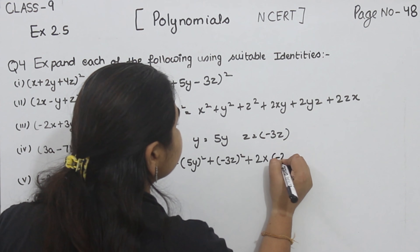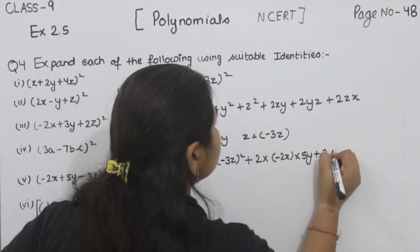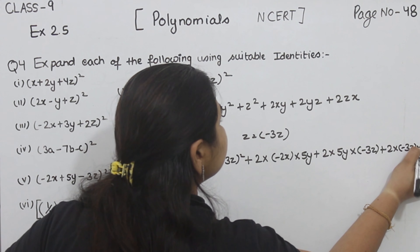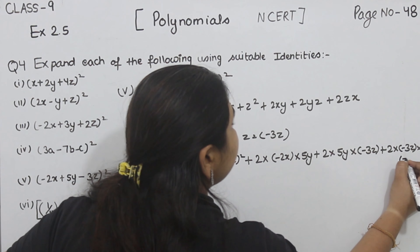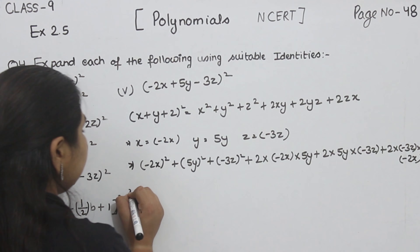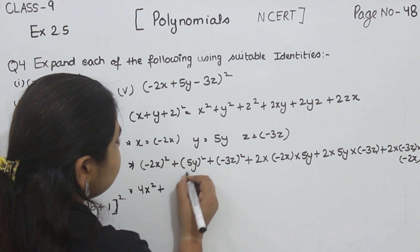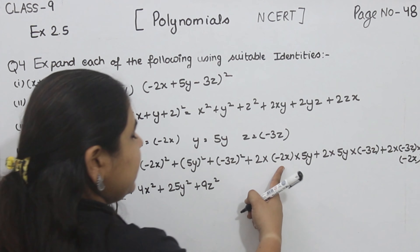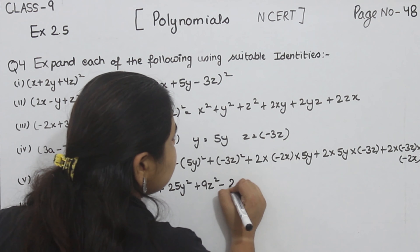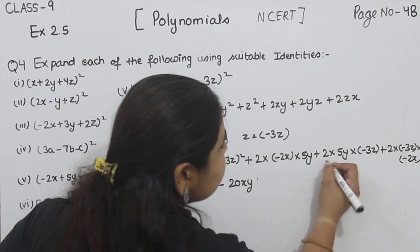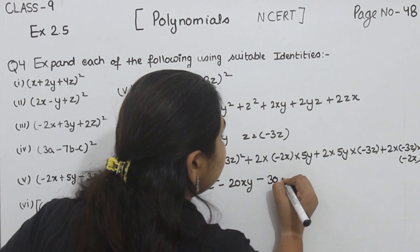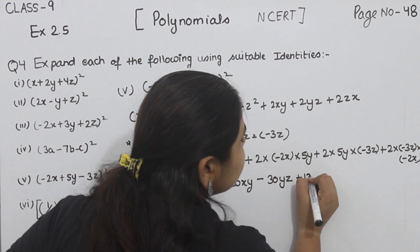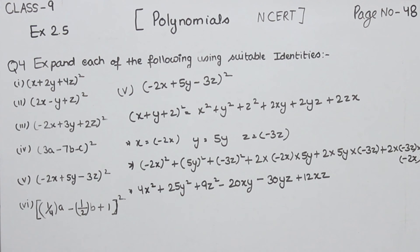Now: X square plus Y square plus Z square plus 2XY plus 2YZ plus 2ZX. Solving: minus 2X squared is 4X square, plus 5Y squared is 25Y square, plus minus 3Z squared is 9Z square. Now 2 times minus 2X times 5Y: 5 times 2 is 10, times 2 is 20, with the negative gives minus 20XY. Plus 2 times 5Y times minus 3Z: minus times gives minus 30YZ. Plus 2 times minus 3Z times minus 2X: minus times minus gives positive, 3 times 2 is 6, times 2 is 12, so plus 12XZ. This is part 5.